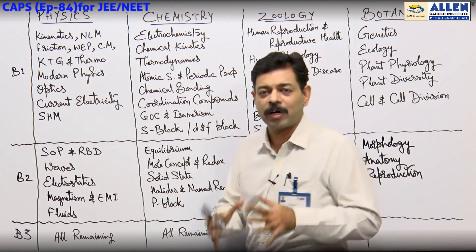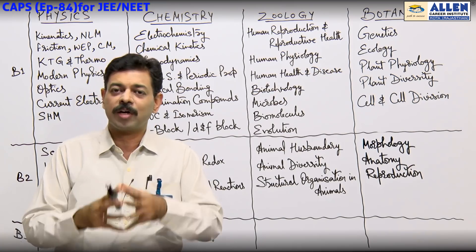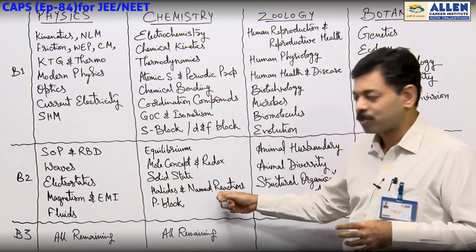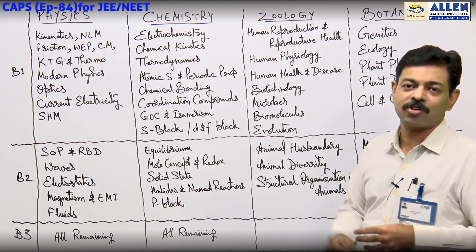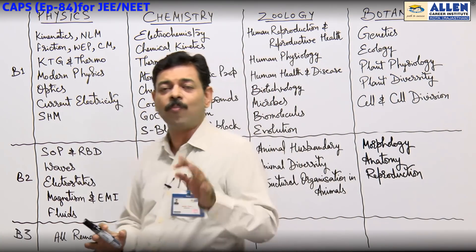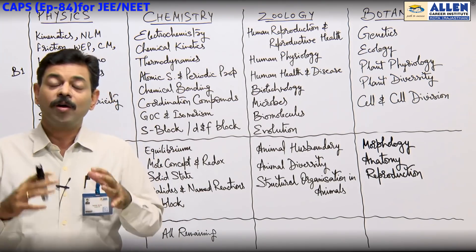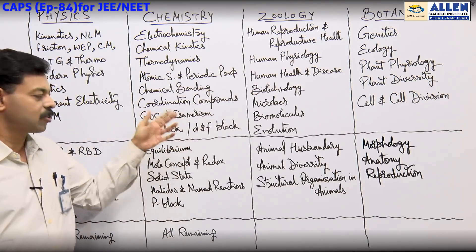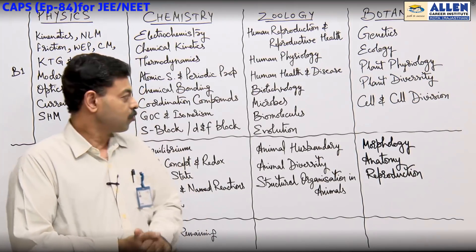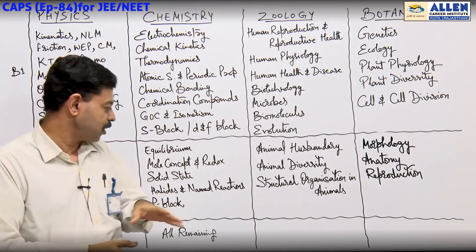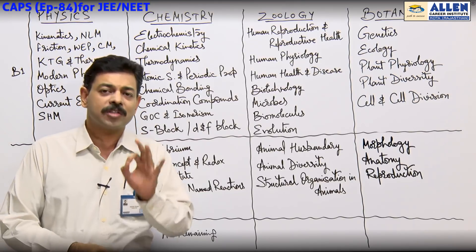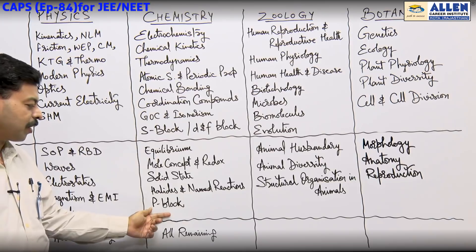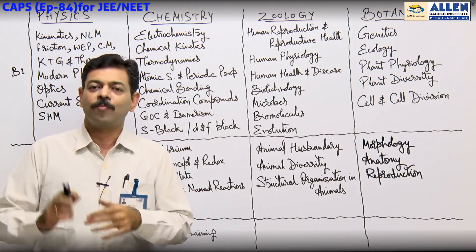GOC (General Organic Chemistry) and Isomerism have been placed in Block One because they are fundamental topics. If GOC and Isomerism are done well — even up to Stereo Isomerism — and Named Reactions and Halides are done well, Hydrocarbons included with GOC Isomerism, that's how Block One and Two are divided in Chemistry. Solid State is a small topic — not certain but one or two questions come. P-Block goes with Chemical Bonding. Metallurgy and all other topics in Block Three.